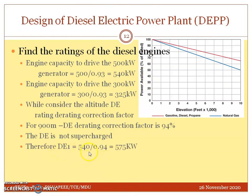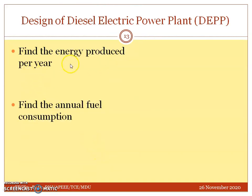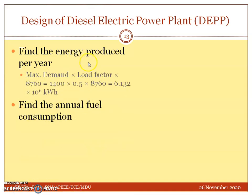When this altitude correction is incorporated, the first diesel engine requirement becomes 575 kilowatt and the second machine requires 346 kilowatt. Next, energy produced per year is calculated as maximum demand multiplied by load factor multiplied by total hours in a year, giving 6.132 × 10^6 kilowatt-hours.